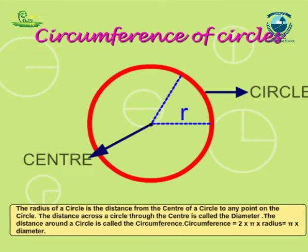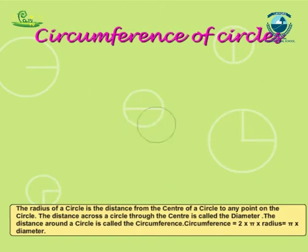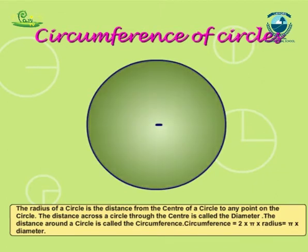A circle is a shape with all points the same distance from the center. The radius of a circle is the distance from the center of a circle to any point on the circle.